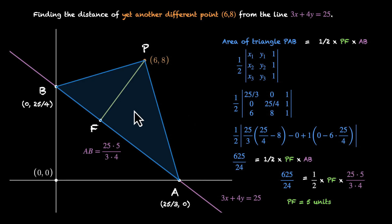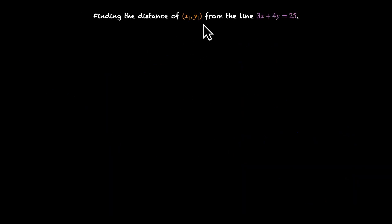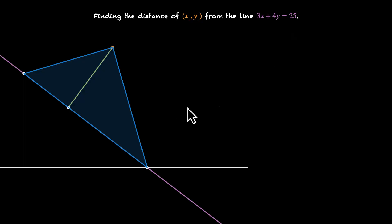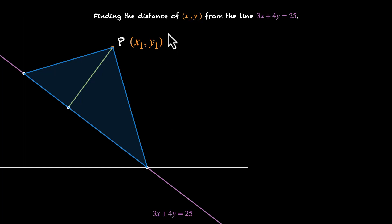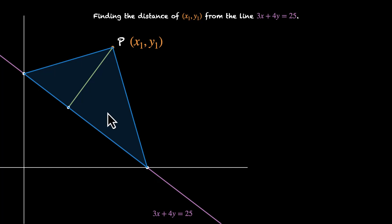I highly recommend that you pause the video and try this on your own first. Let's generalize the point. We have this specific line 3x plus 4y equals 25 — the line you have been working with. But this time the point is x1, y1. We are trying to find the distance of any point from this line. Same approach: we try to find this length. It sits inside this triangle, so if we know the area of the triangle and the base, we can use these two to find this length.